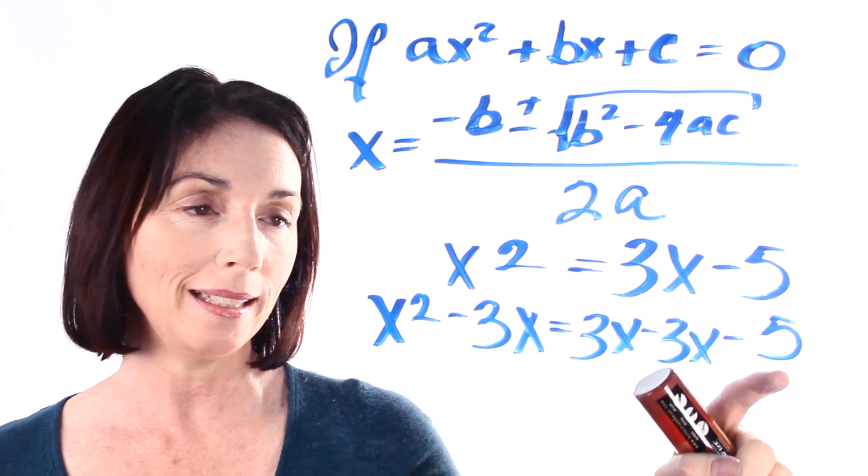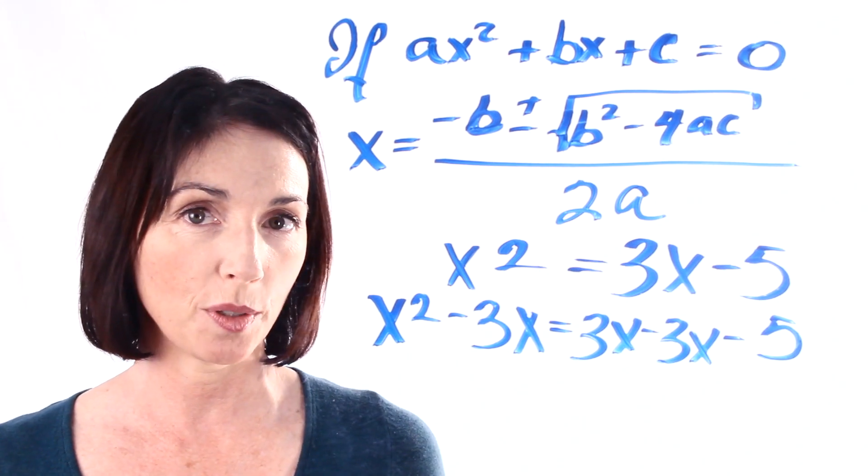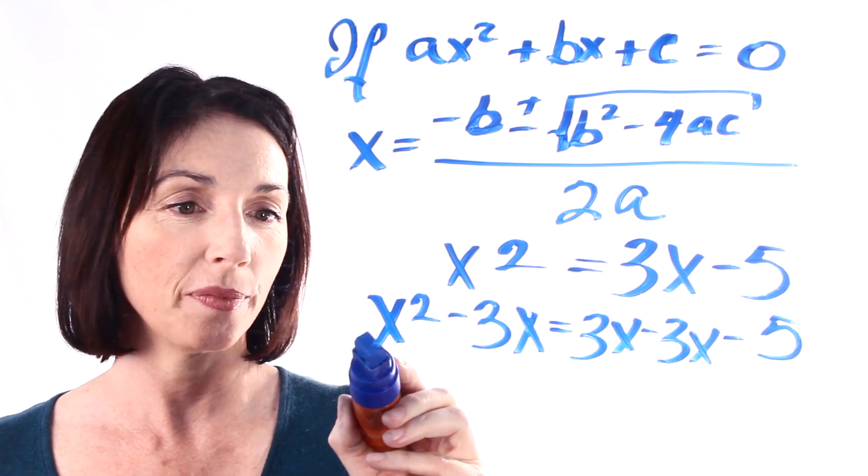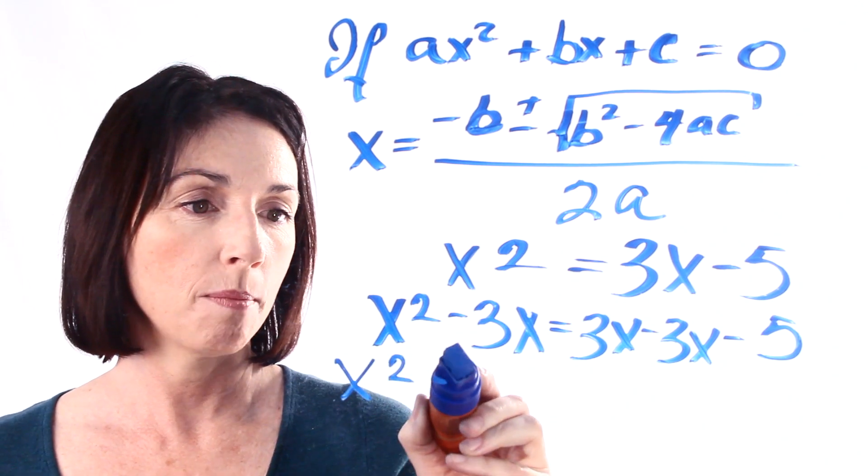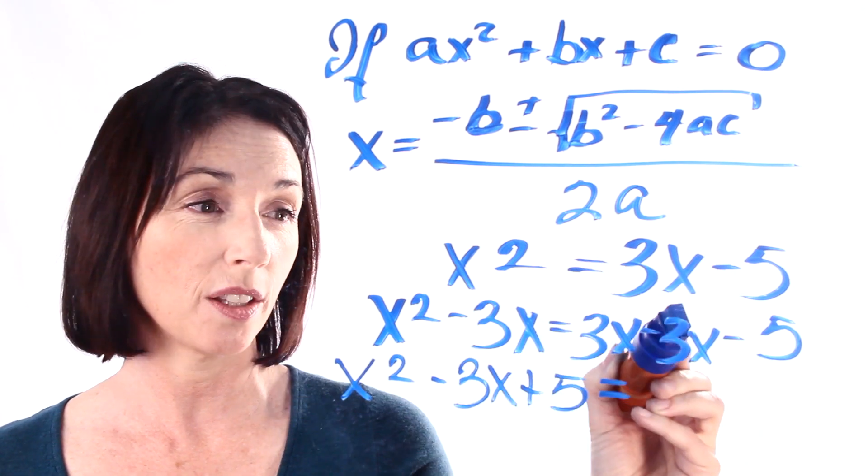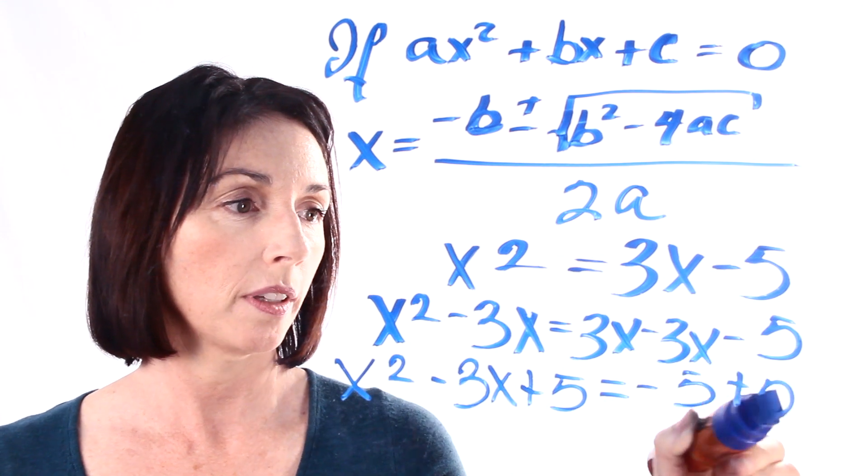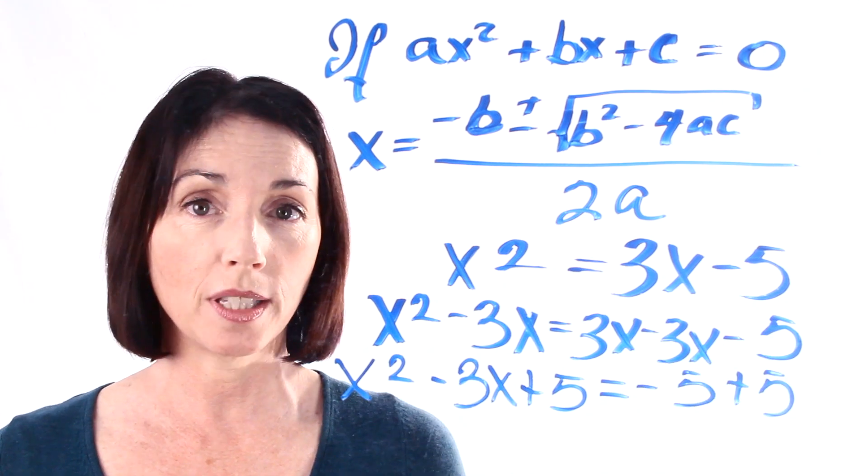So now what we need to do is we need to get this 5 over to this side. And we can do that by adding 5 to both sides of the equation. So here we go. x squared minus 3x plus 5 equals, the 3x and the 3x just went away, minus 5 plus 5 and minus 5 plus 5 is equal to zero.